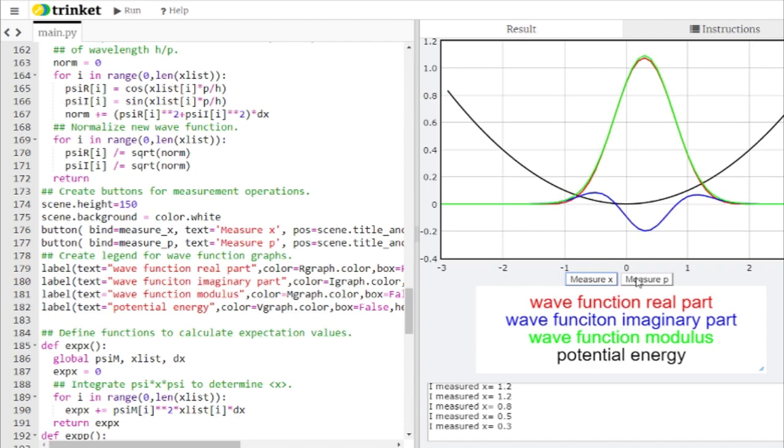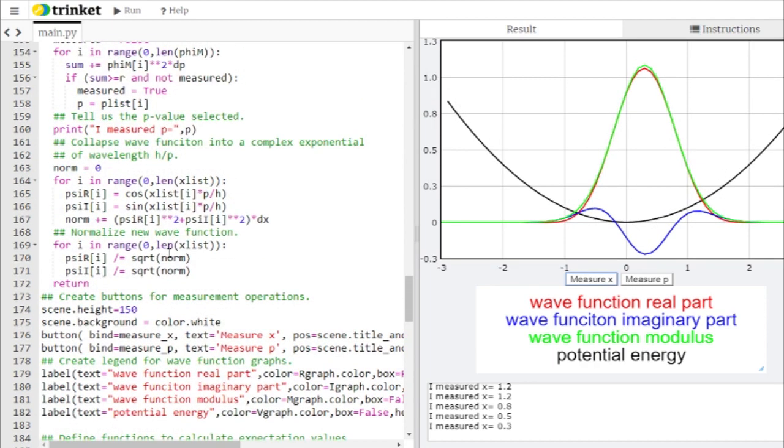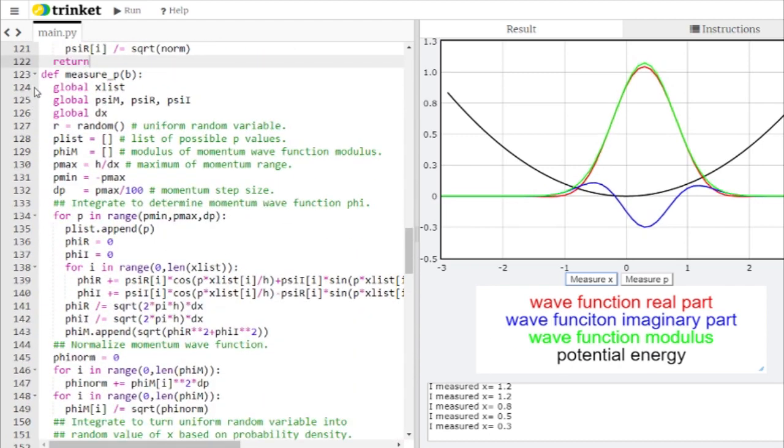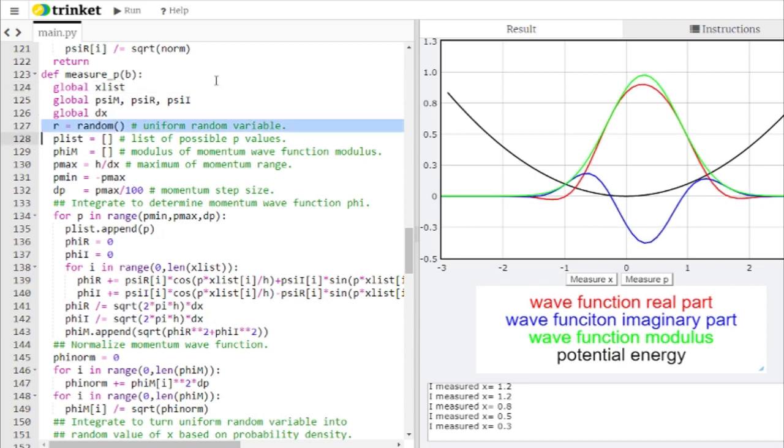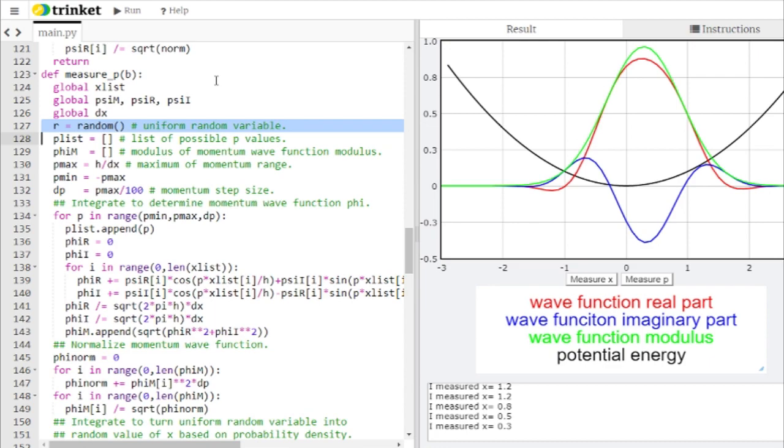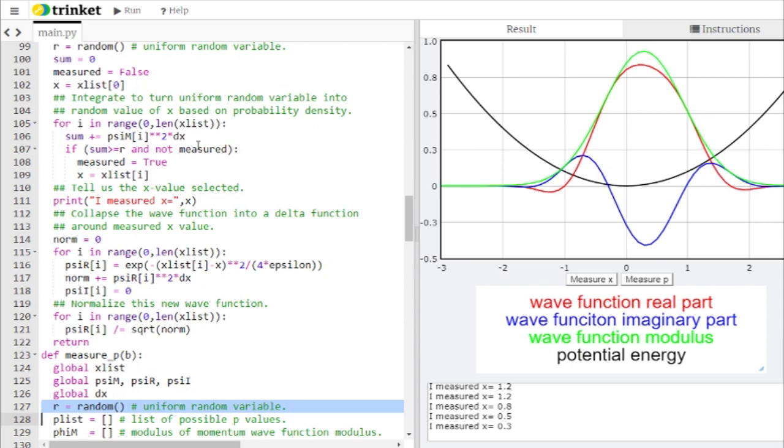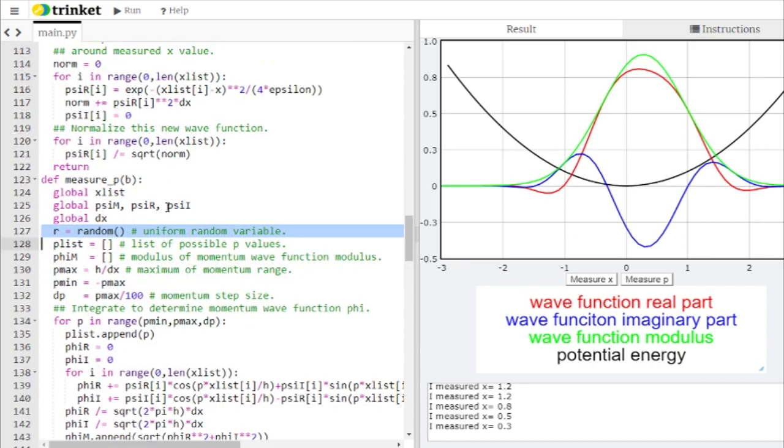We can do the same thing with the momentum. So here I've set up a momentum that uses the measure p function. This gets into things a little bit more differently though, because the momentum is not as straightforward to get out as the position. Because for position, since I'm measuring my wave function based on its position, position is easy to determine. But because I'm measuring in position, the momentum is more difficult to work out. Let me show you what this looks like. So we've got our random uniform variable. We're going to go through the same kind of process. But what I need now is the probability distribution for the momentum. The psi m up here that I was using, that's the probability distribution for the position. What I need here is the probability distribution for the momentum.